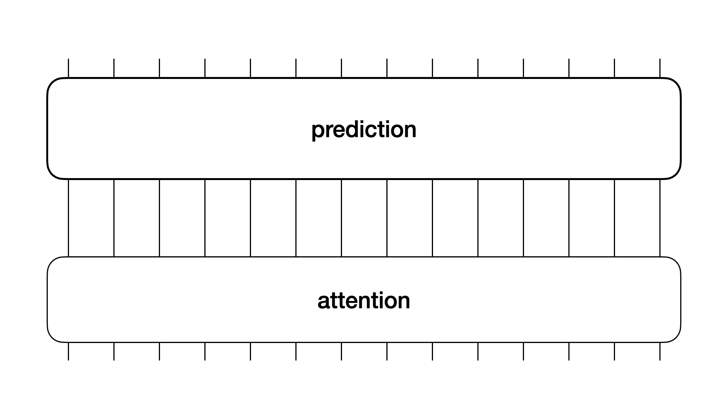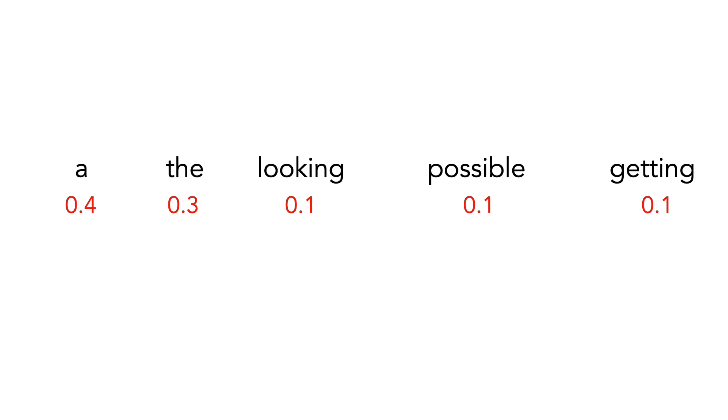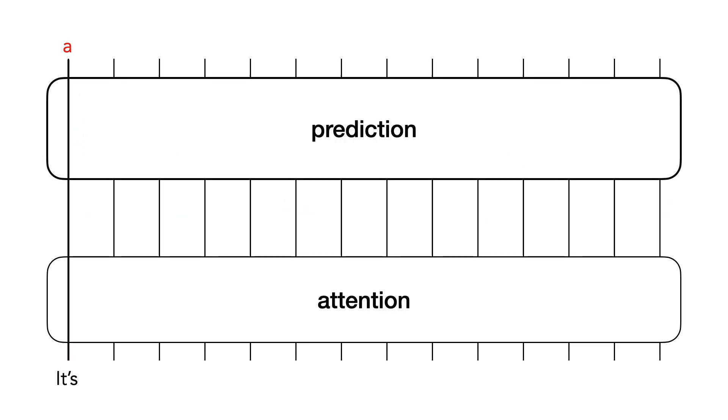So how do we use this to generate text? Let's choose a word to start our sentence, its, and feed it through the network. It predicts a as the next word. Actually, you'll get multiple suggestions with different probabilities, and you can randomly choose one of the best. But suppose we chose a. We'll now add the word a as our next input and feed that through the network to generate the third word, lot. And so on.